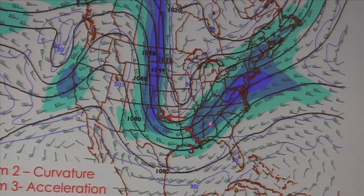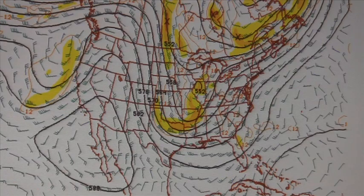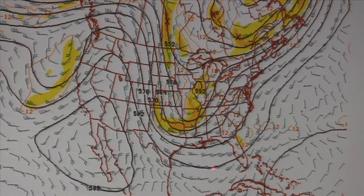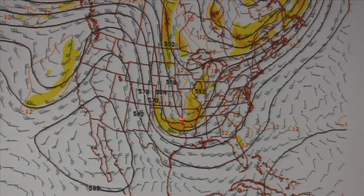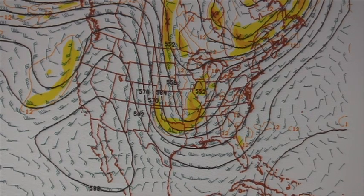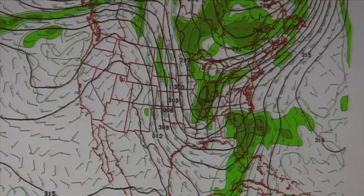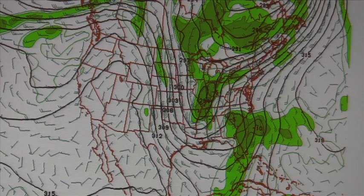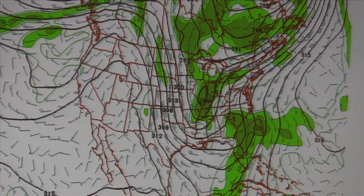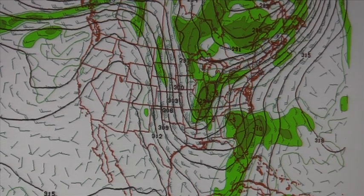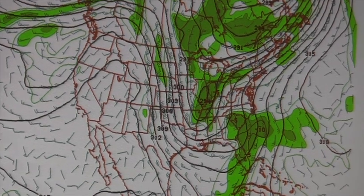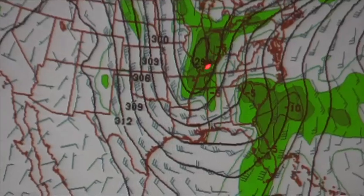For the 24-hour forecast at 250 millibars, term two dealing with this trough is starting to approach closer to Birmingham, although it's not affecting us yet. At the 500 millibar level, this vort max is definitely intensifying and still headed our way.